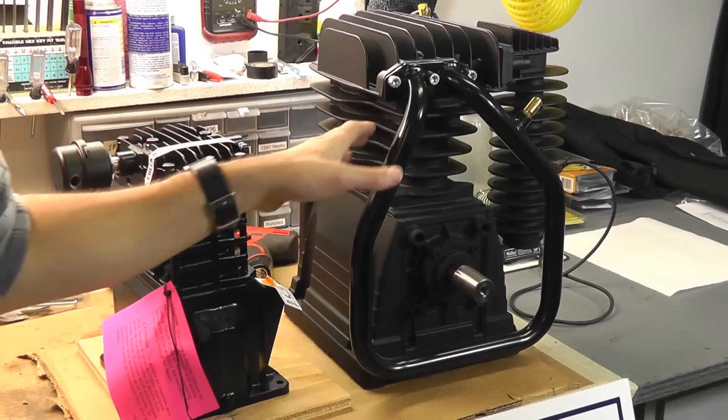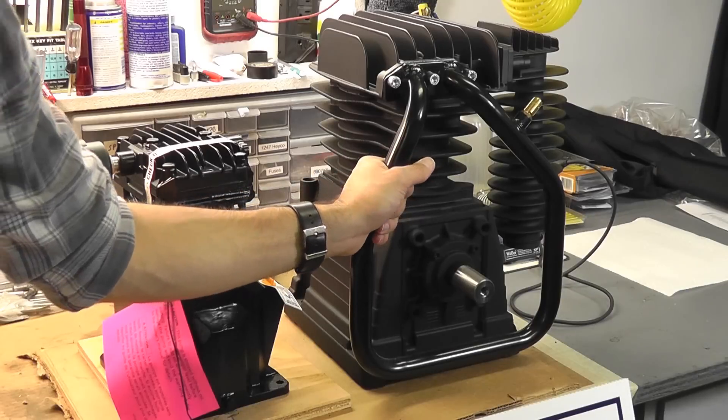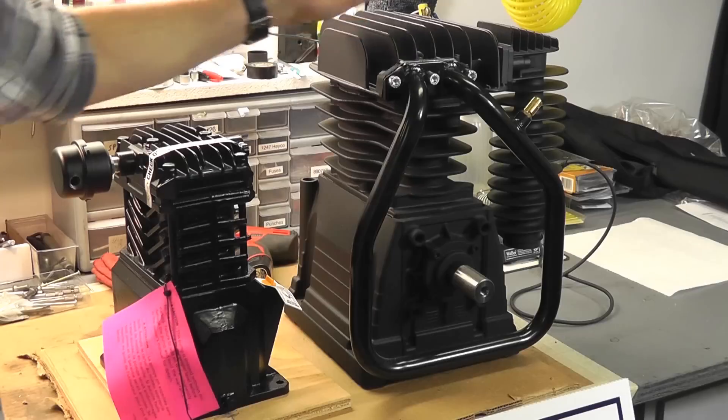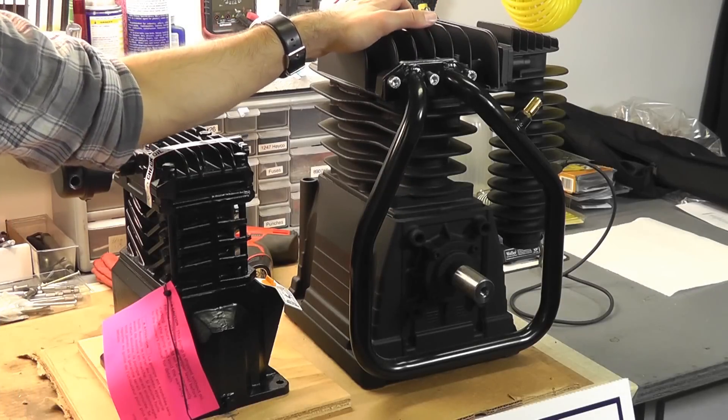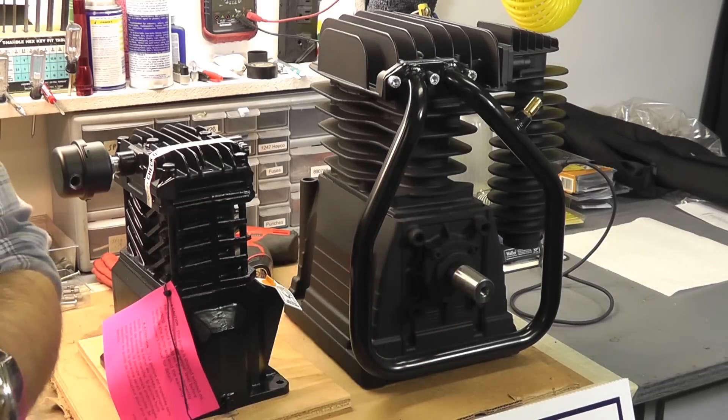So, two-stage units typically pump up to a maximum of 175 to even 200 psi, and further even. But typically around 175 psi max, using a lot of stationary compressors in your shop, garage, you know, what have you. So, that's the main difference between the two.